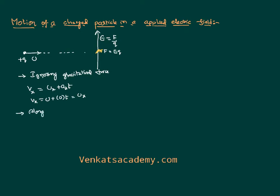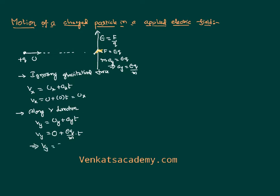Along the y direction, I can write v y using the formula v = u + at, so v y = a y × t. What is a y? Because of the force, F = ma, and the force along y direction is eq. That implies acceleration along the y direction is eq/m. The particle has no initial velocity along y, so v y = (eq/m) × t. The particle along the y direction does not have constant velocity; rather it has a variable velocity with respect to time: (eq/m) × t.